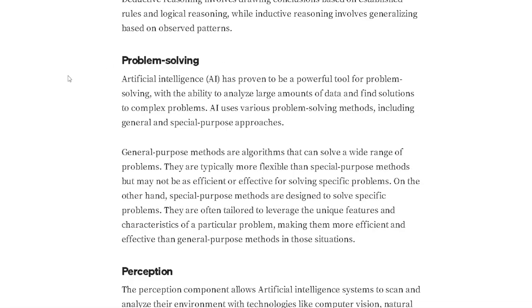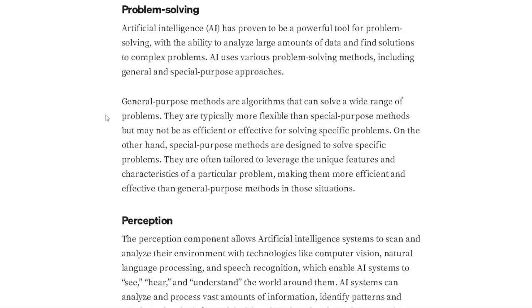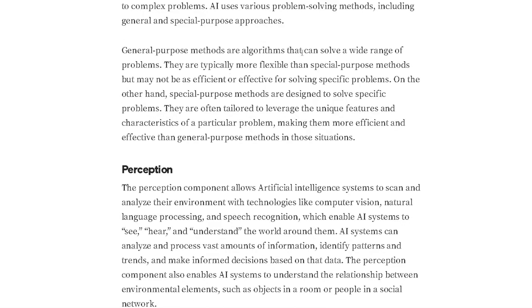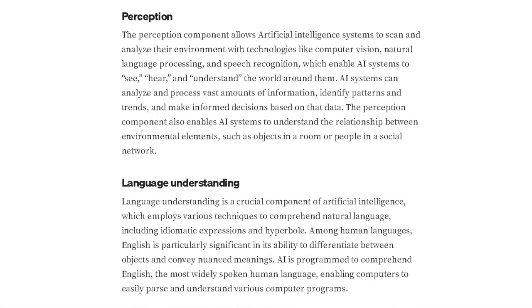AI uses various problem-solving methods including general and special-purpose approaches. General-purpose methods are algorithms that can solve a wide range of problems — they are typically more flexible than special-purpose methods but may not be as efficient for specific problems. Special-purpose methods are designed to solve specific problems, tailored to leverage the unique characteristics of a particular problem, making them more efficient and effective in those situations.